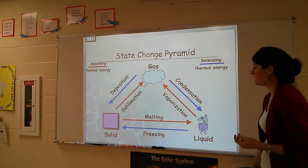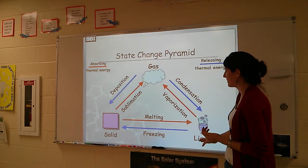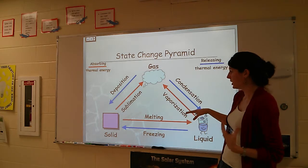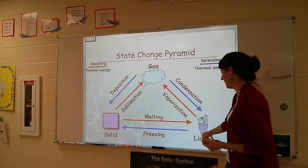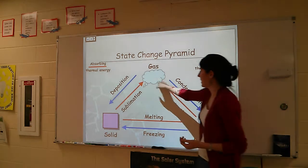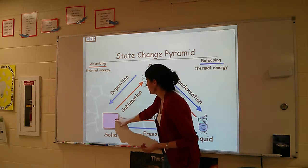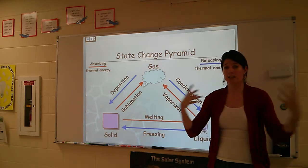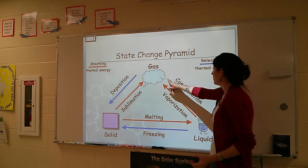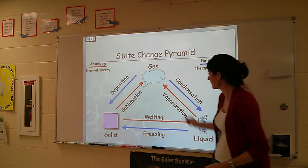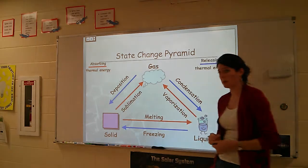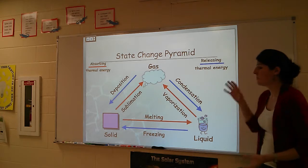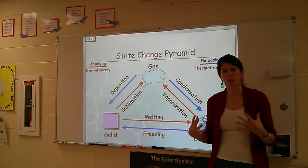Back to the state change diagram — every time a substance absorbs thermal energy, we have a red arrow. It takes thermal energy absorbed for a solid to become a liquid, for a liquid to become a gas, and for a solid to become a gas through sublimation. When thermal energy is released — heat is leaving that object — gas can condense into a liquid, gas can go through deposition to become a solid, and liquids can freeze to become a solid. Keep in mind where that thermal energy is going, because that's the real reason these things are happening.